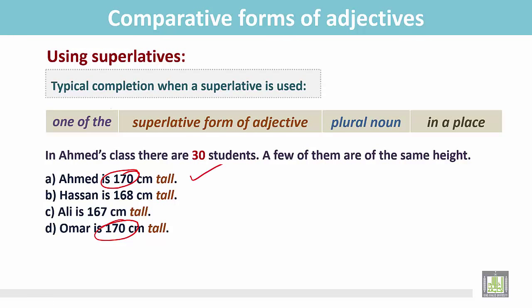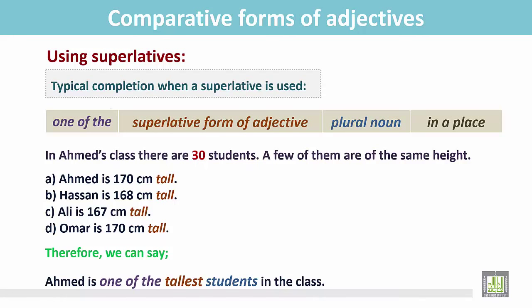So we cannot say Ahmed is the tallest student in the class or Omar is the tallest student in the class. Both of them are the tallest. So we can say this way: Ahmed is one of the tallest students in the class. We use one of the before the superlative form of the adjective and then it is followed by the plural noun.